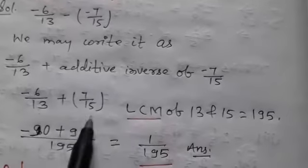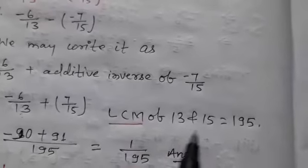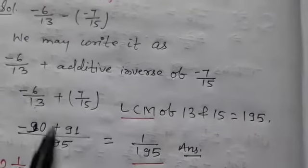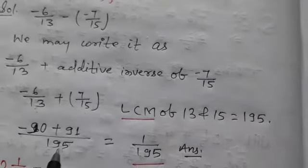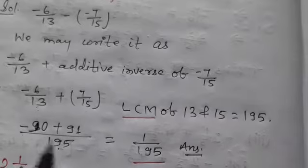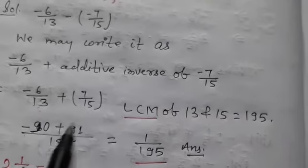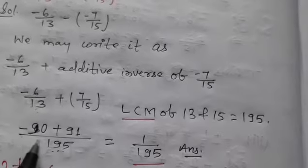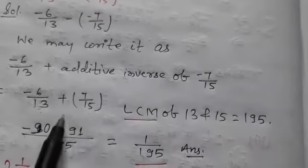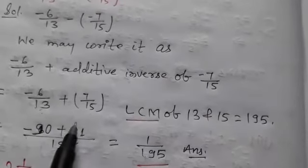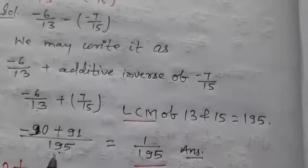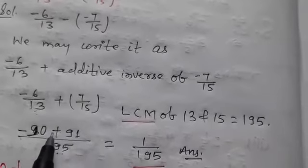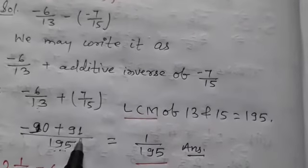Now we find the LCM of 13 and 15, which is 195. When we solve it, it becomes 1/195.